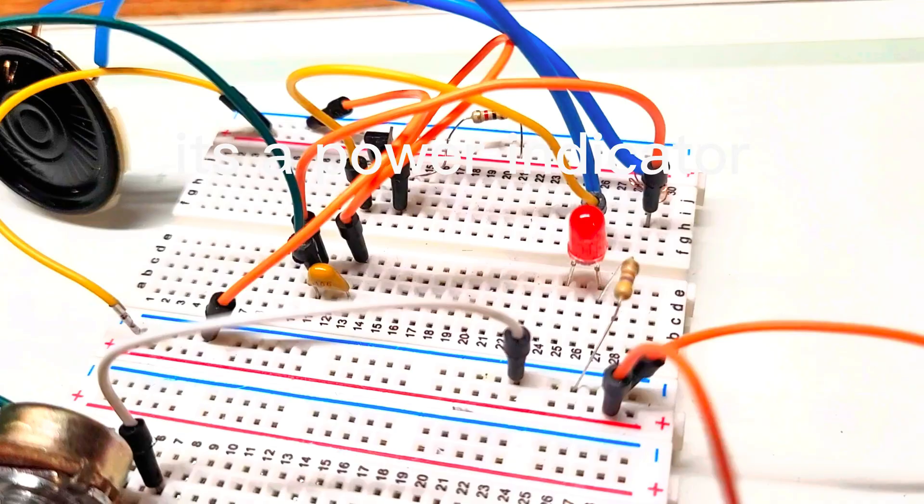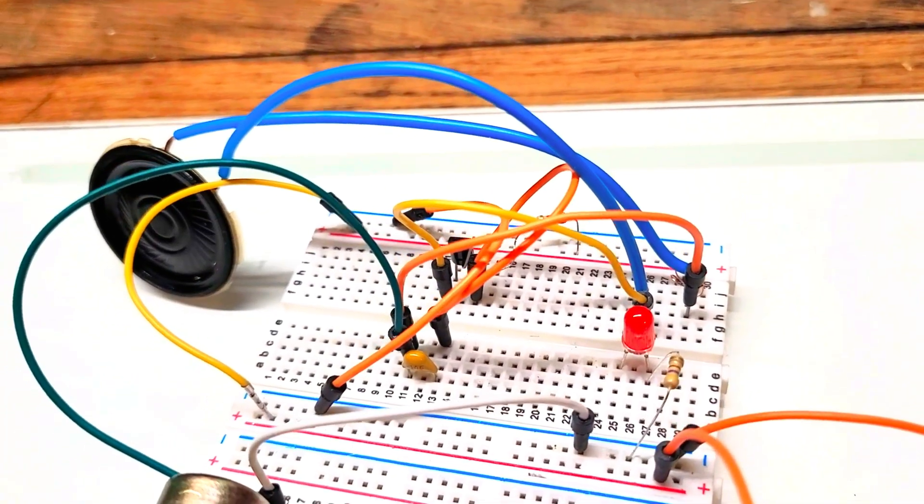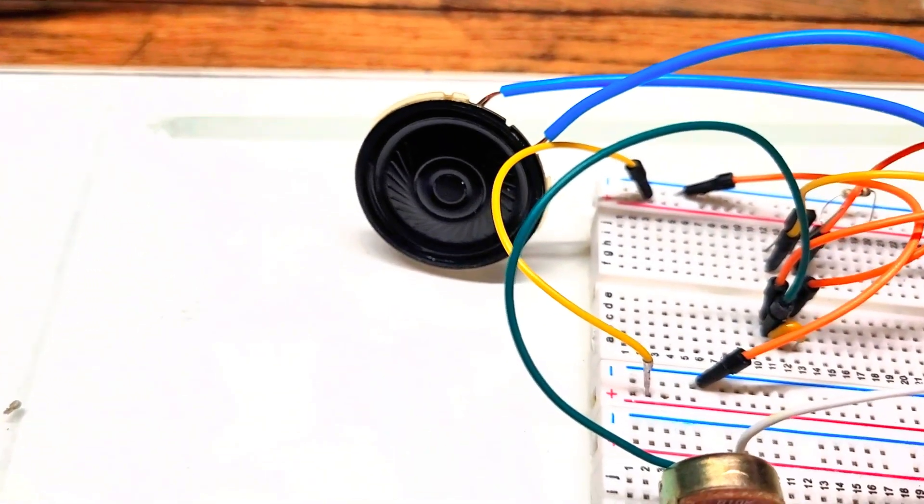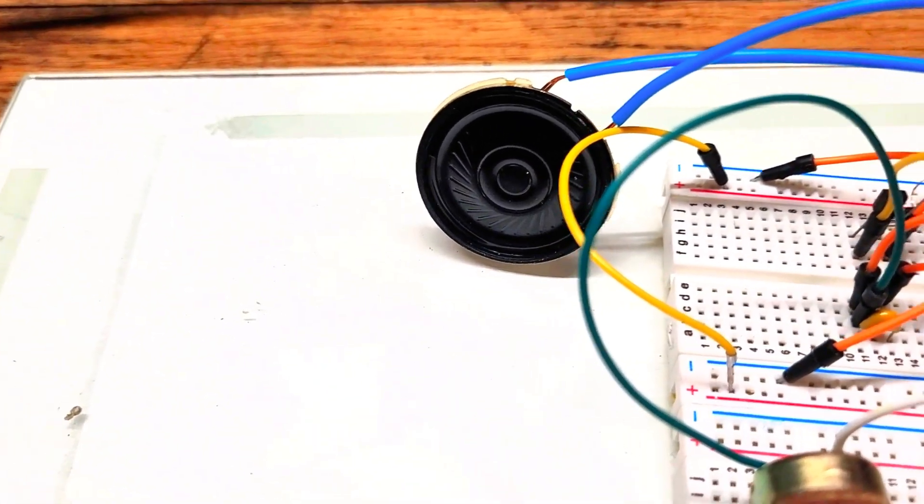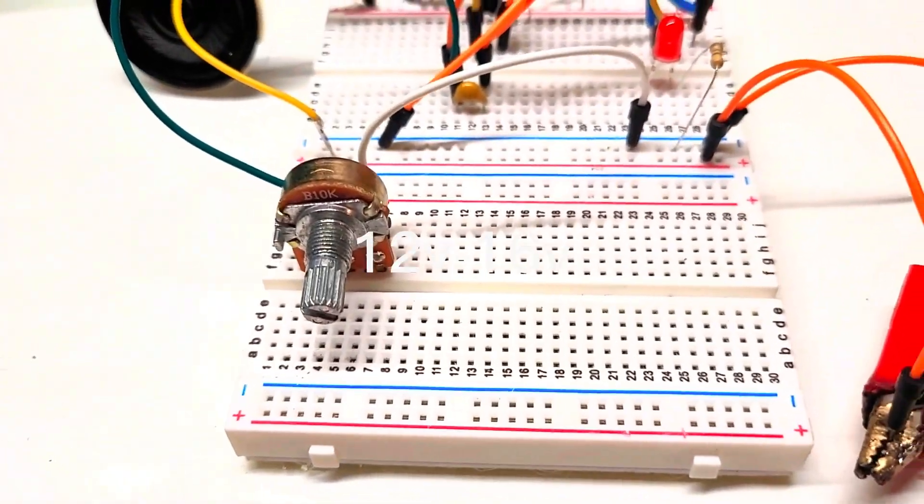And then over here we have an LED, which is not currently hooked up. And of course, last but definitely not least, we have the speaker itself. This little guy came out of a pair of headphones and it's pretty loud for a headphone speaker. Oh, to be clear, this does run off of 12 volts, by the way, for anyone who wants to build one at home.